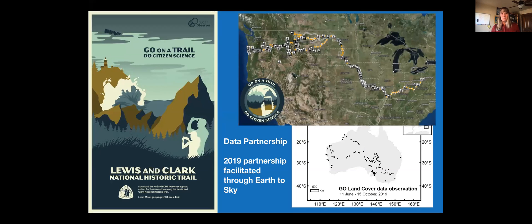These are the types of partnerships that we have been trying and think have been really successful. In 2019, we held a data challenge with the Lewis and Clark National Historic Trail — a partnership facilitated through Earth to Sky. With the trail staff, we defined what kind of data they might want from Globe Observer and set up a public challenge to try to get that data for them. We opened the challenge to anybody, not just those along the trail, but did ask for specific things on the trail. A scientist in Australia saw the challenge and set up his own team to get Australia scouts to collect Globe land cover data using the app.